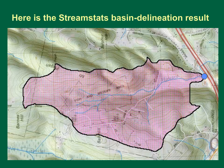This figure is our basin for Harwood Brook, Massachusetts as it was delineated by the online USGS StreamStats application for Massachusetts. The basin divide, or watershed, is the black line. The pink area is the drainage area. Hopefully, your manual delineation looks like this one.